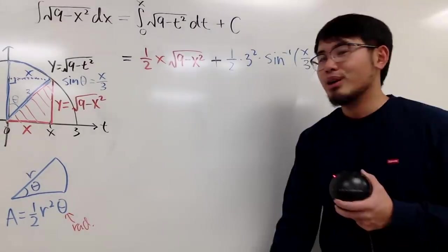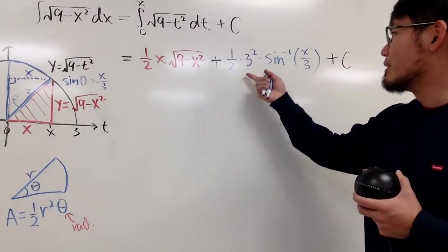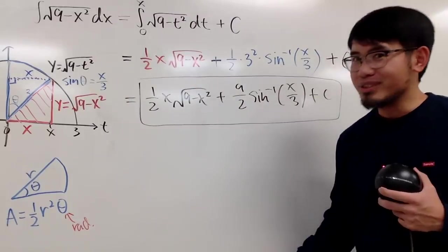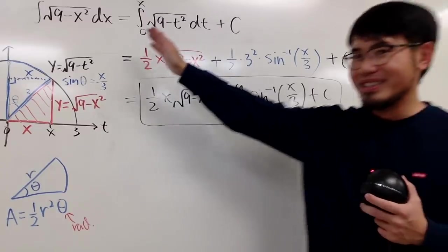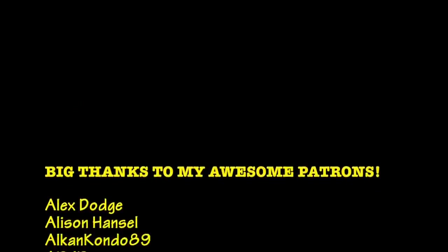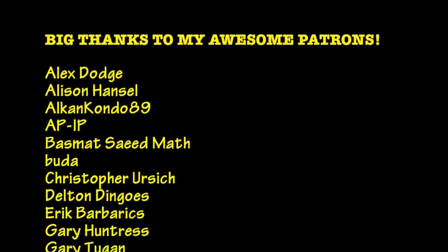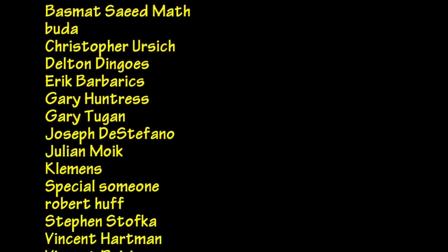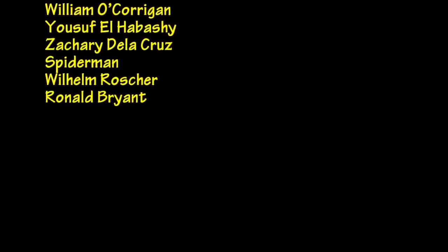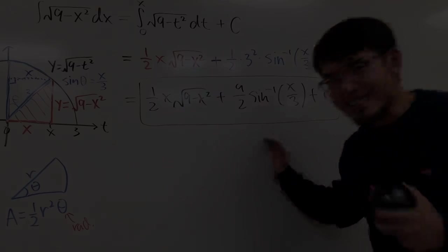Put plus C. Of course, you can clean this up a little bit. 3 squared is 9. You don't need to use calculus to do this calculus 2 integral. Very cool. And I think this is really, really cool. Leave a comment down below and let me know if you have any questions. And if you're new to my channel, be sure to subscribe. Thank you guys so much. And as always, that's it.